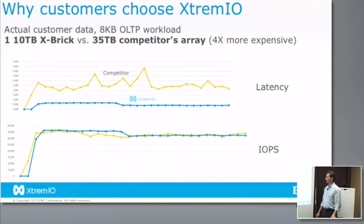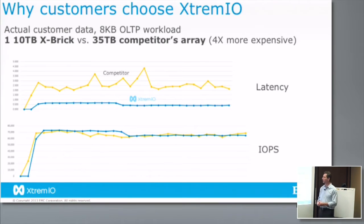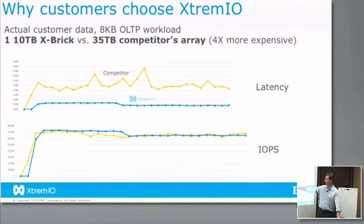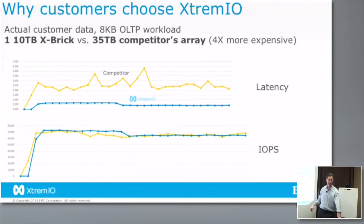This is data from customers during POCs. In this case, a single 10-terabyte X-Brick was tested against a competitor's array that was maxed out — the biggest configuration they offered. In terms of IOPS, they were pretty comparable. But look at the latency profile: the blue line is XtreameIO — very predictable sub-millisecond. The competitor's array was running anywhere up to about five milliseconds, bouncing all over the place.